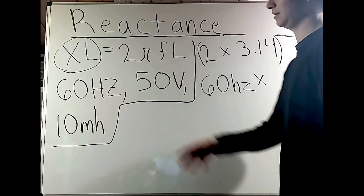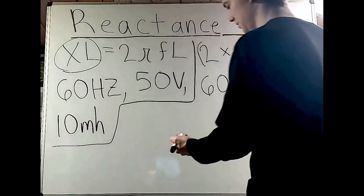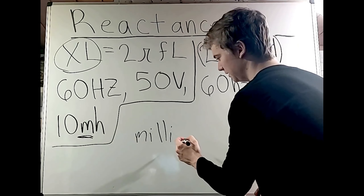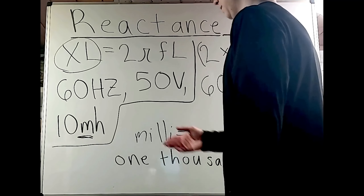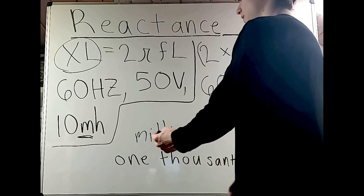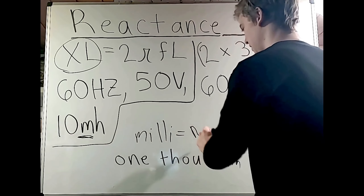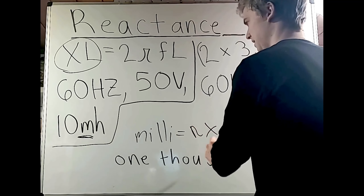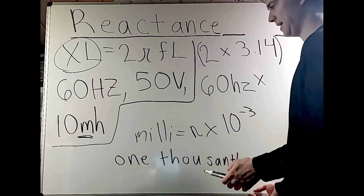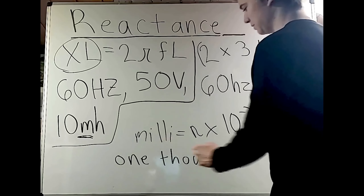We need to turn 10 millihenries into actual henries. Since milli is a thousandth, that is 10 to the negative third power, giving us 0.001. For our value of 10 millihenries: 10 × 10⁻³ = 0.01 henries.